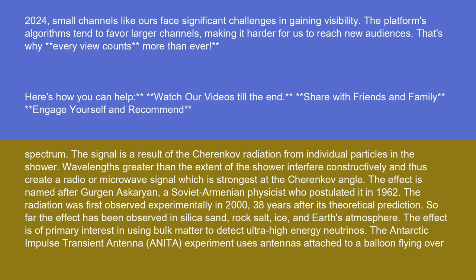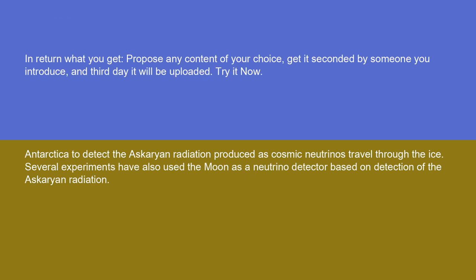The effect is of primary interest in using bulk matter to detect ultra-high energy neutrinos. The Antarctic Impulse Transient Antenna (ANITA) experiment uses antennas attached to a balloon flying over Antarctica to detect the Askaryan radiation produced as cosmic neutrinos travel through the ice.